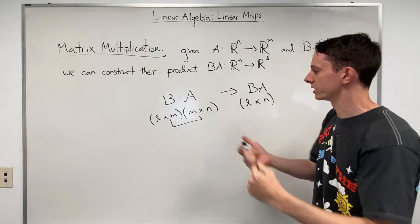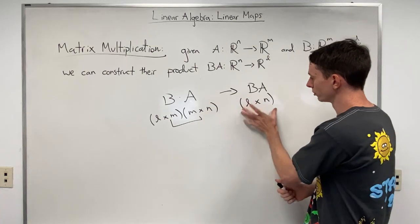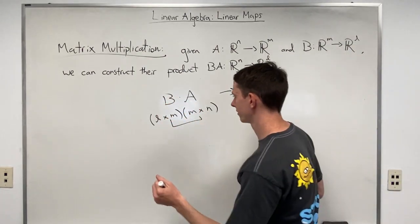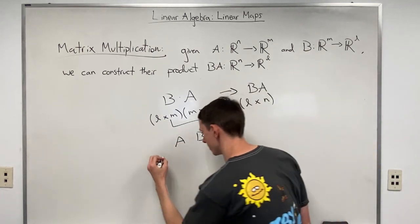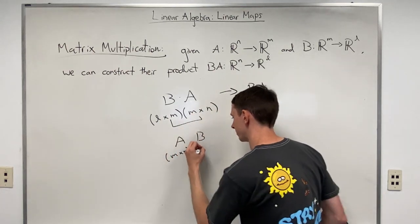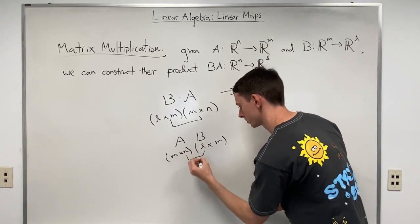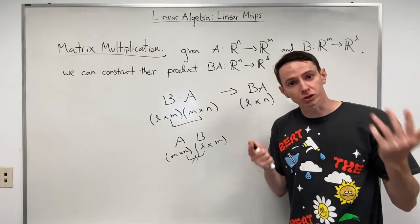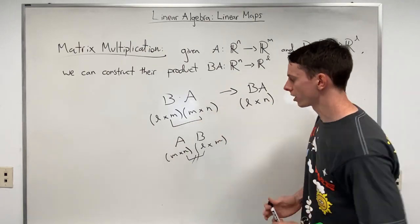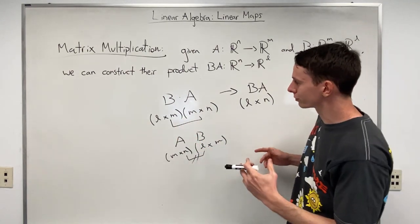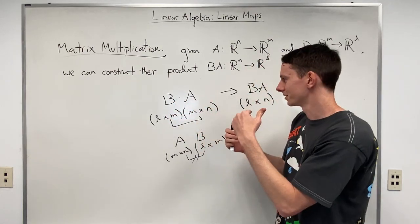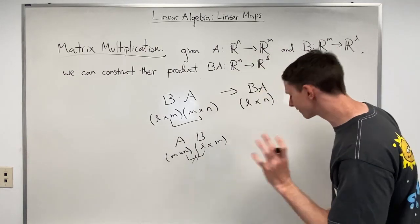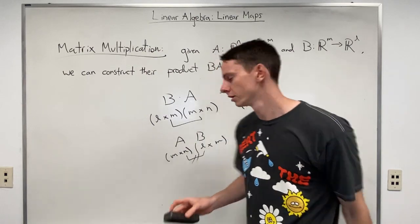This is a quick way to check: do the inner dimensions match? If yes, we can multiply, and the output has the outer dimensions. Notice I wrote B times A and not A times B. If we tried A times B — A is M-by-N and B is L-by-M — the inner dimensions N and L don't match, so we can't perform that multiplication. Matrix multiplication is not commutative: B times A is not the same as A times B, and in some cases one order simply isn't possible.